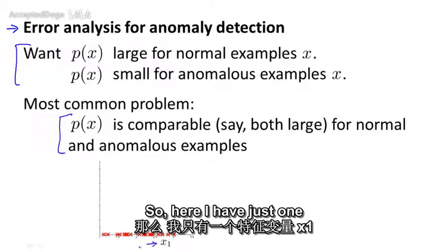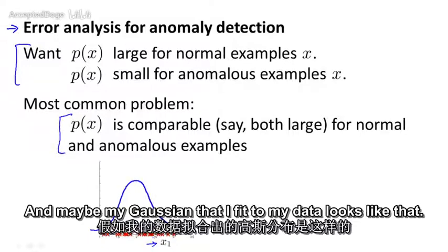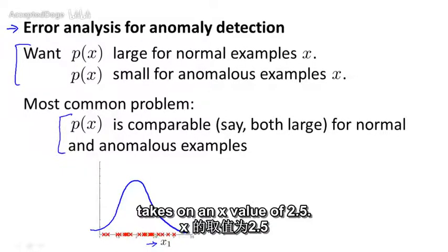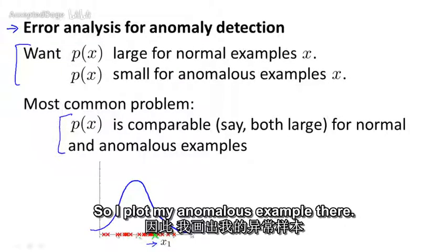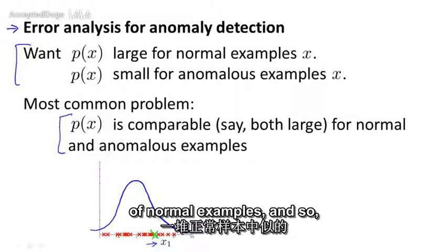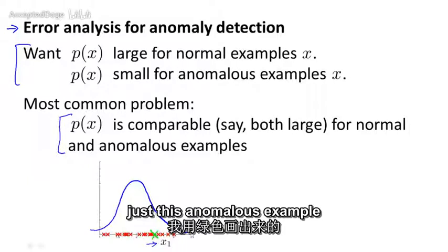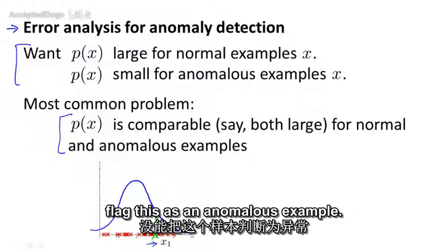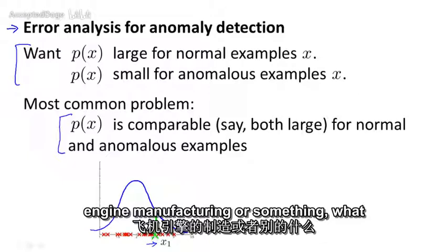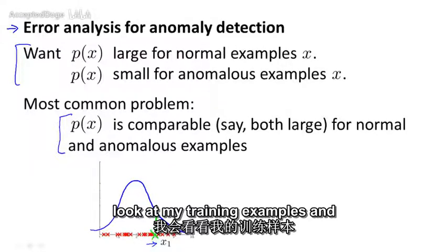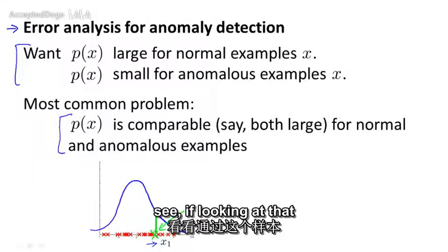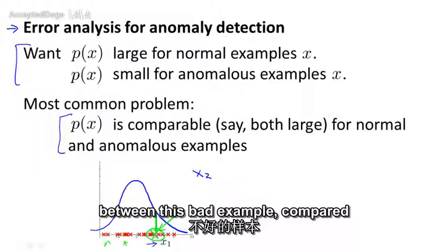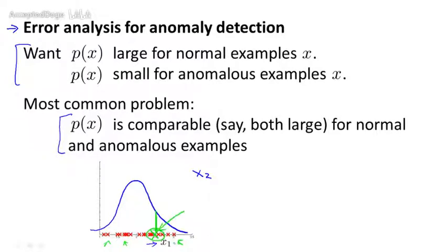Let's look at a specific example. Suppose I have unlabeled data with just one feature x1, and I fit a Gaussian to it. Let's say I have an anomalous example that takes on an x value of 2.5 — it's buried in the middle of a bunch of normal examples. This anomalous example gets a pretty high probability (the height of the Gaussian curve), and the algorithm fails to flag it as anomalous. If this were aircraft engine manufacturing, I would look at what went wrong with that particular engine to come up with a new feature x2 that helps distinguish it from normal examples.